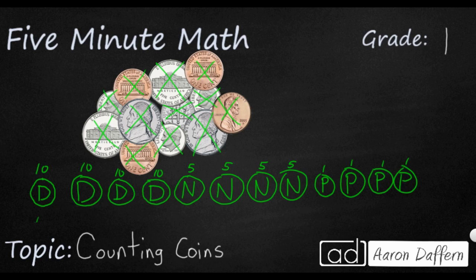So 10, 20, 30, 40. Now we're going to skip count by fives. I'm going to draw a line here because we're changing from dimes to nickels. So 40, 45, 50, 55, 60.